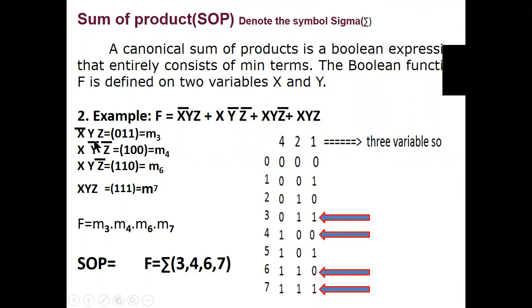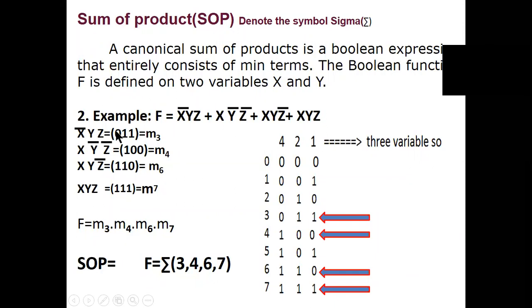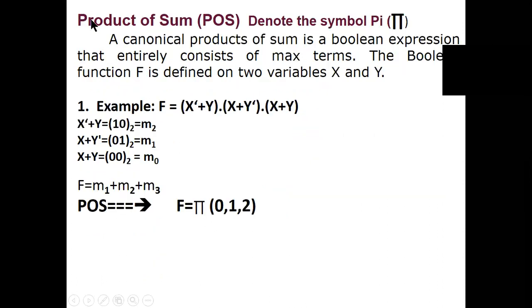Sum of Product is nothing but the min terms. For example, x-bar y z means x-bar is zero, one, one. SOP is denoted by sigma. Product of Sum is denoted by pi. For example, x-bar plus y: x-bar means one, y means zero — that is two. In POS bar means one, y means zero; whereas in SOP this is zero, this is one. Just small changes, that's all.